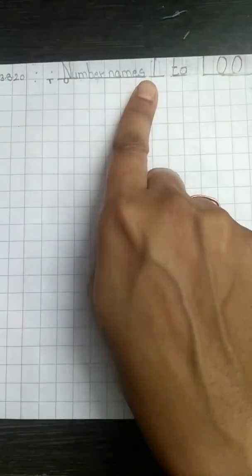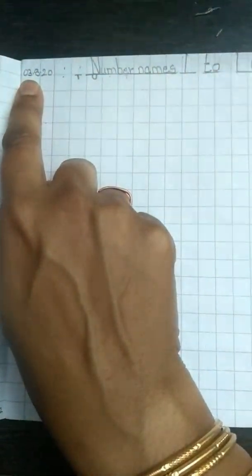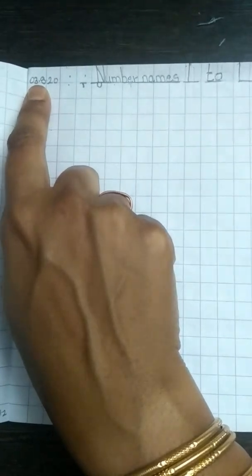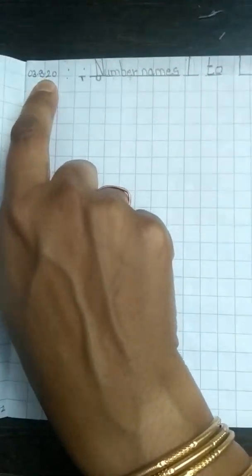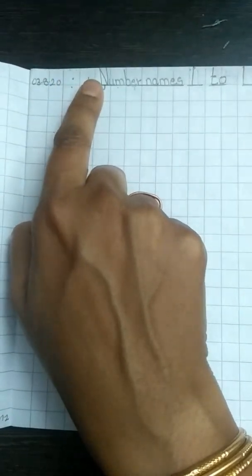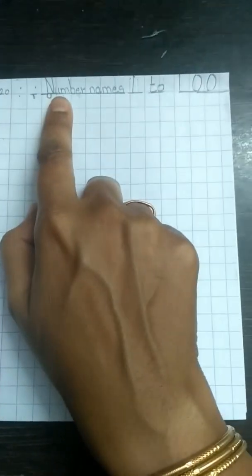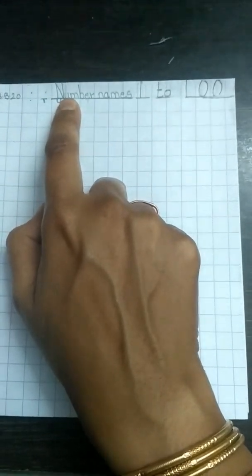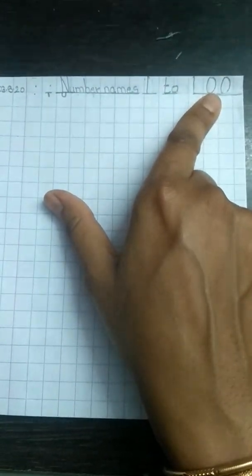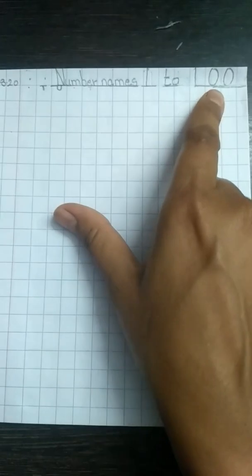New topic means we have to start on a new page. So here I have already written the details, that is the date 03.8.20. Then leave two dots, that is two blocks or two boxes, and then you start writing the title. That is number names 1 to 100. You see, I have written the numbers in the full box.